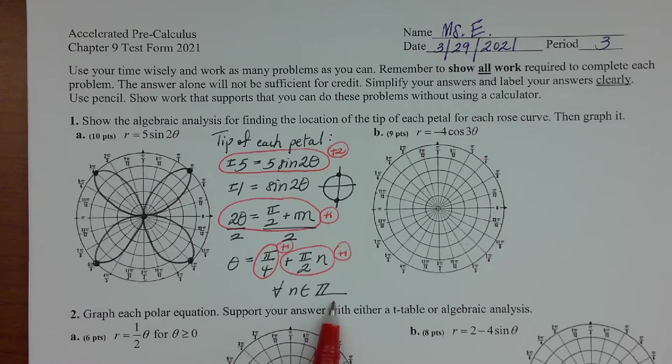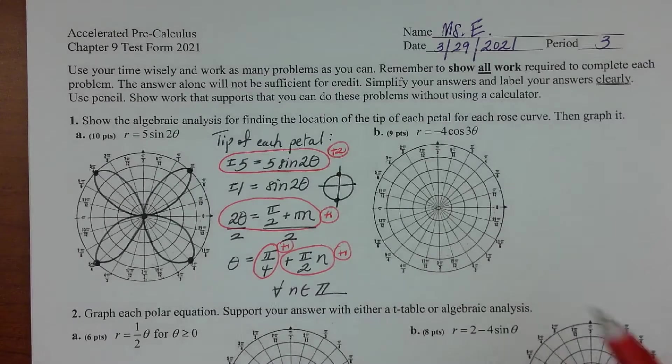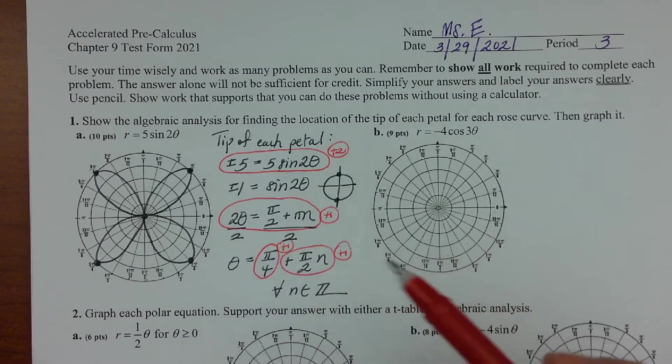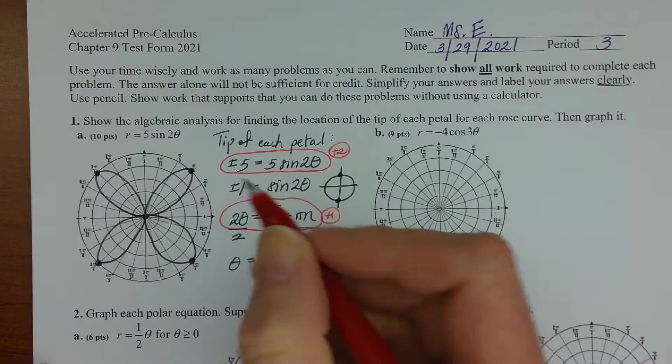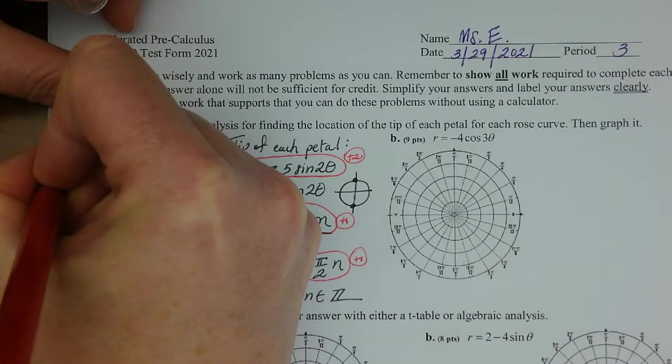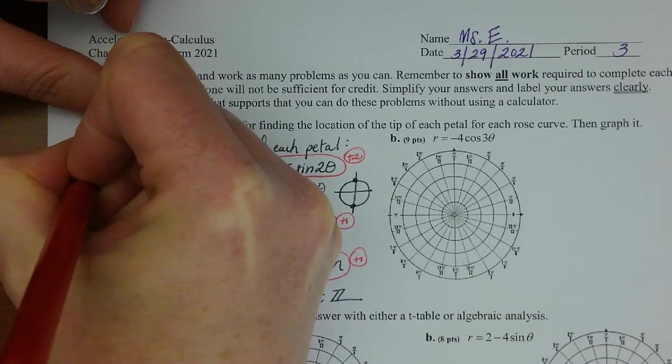Later on you'll be glad you have that habit of kind of thinking that out just a little bit. Let's see, so that's five points. Yeah, five points so far. So five more points for this.